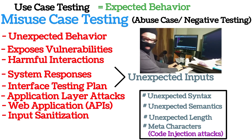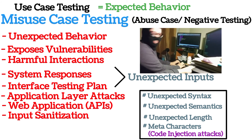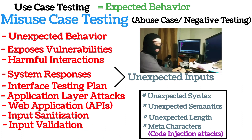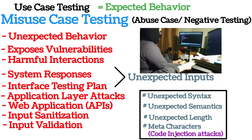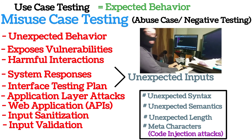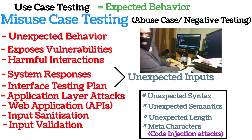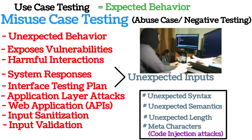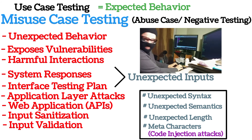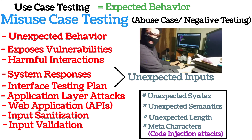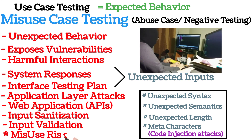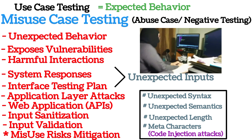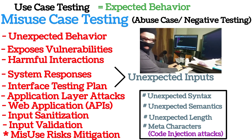One control which we can implement against such system misuses is called input validation. It must be implemented to prevent any incorrect input to the system and to ensure inputs with valid parameters by sanitizing input. Overall, misuse case testing ensures that all system misuse-related risks are identified and mitigated with the help of system developers.